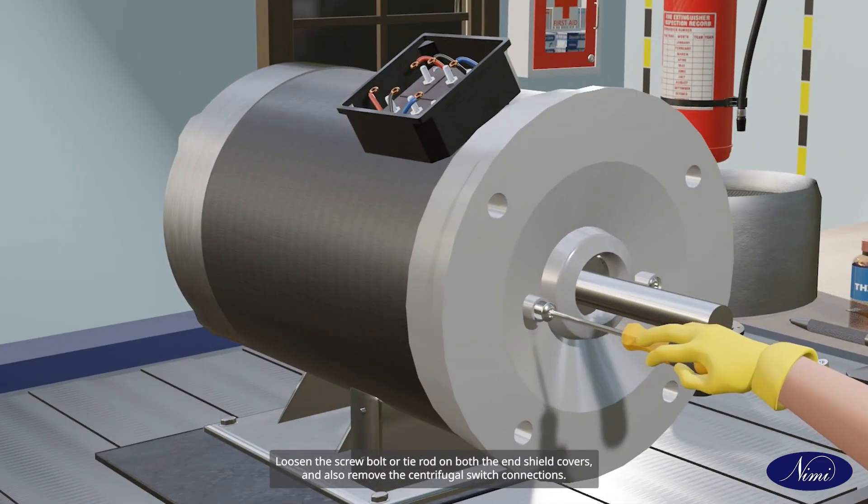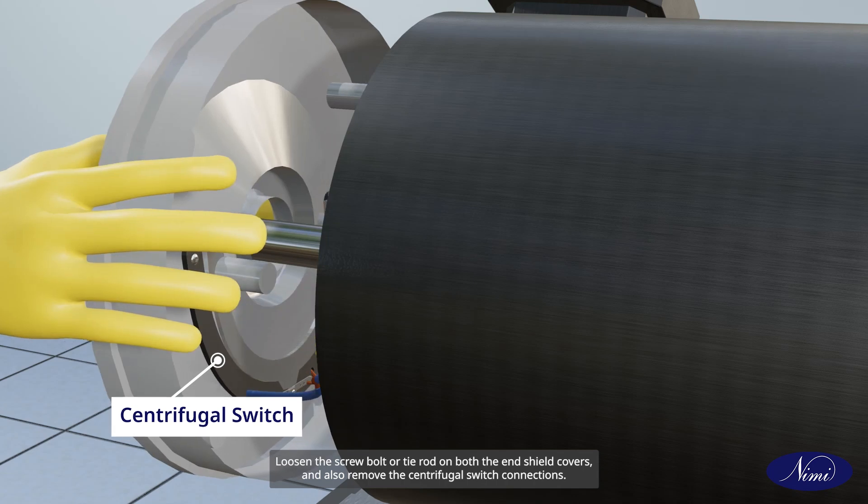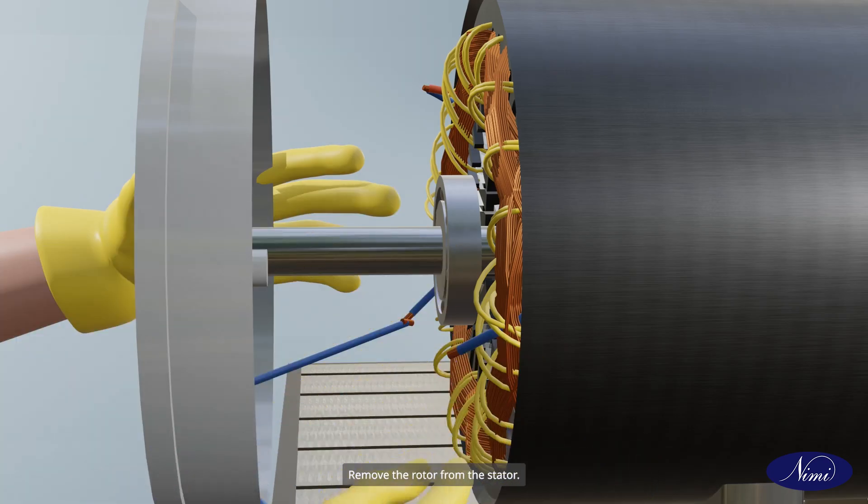Loosen the screw bolt or tie rod on both the end shield covers and also remove the centrifugal switch connections. Remove the rotor from the stator.